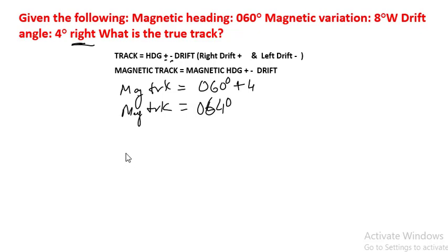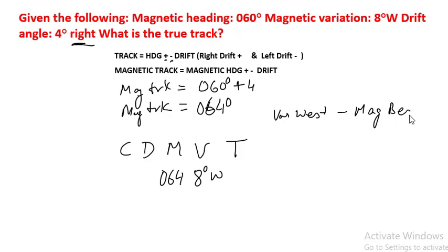To get true track, we will use CDMVT. We have magnetic, which is 064. Variation is 8 degrees west. Now, remember the statement, magnetic best.